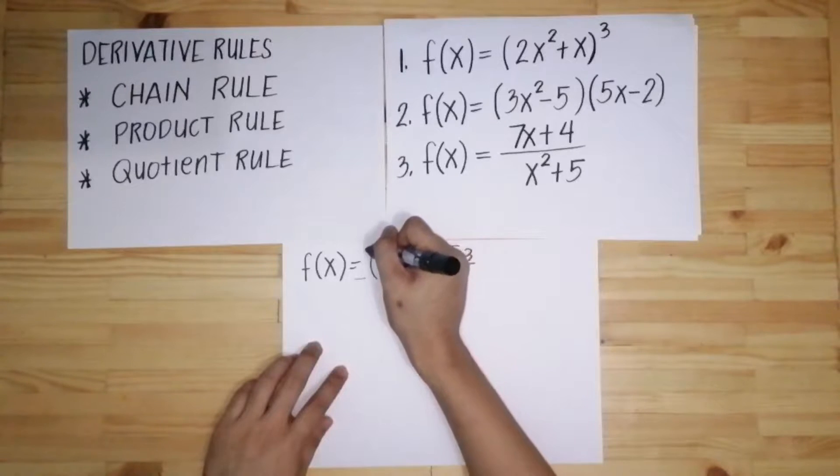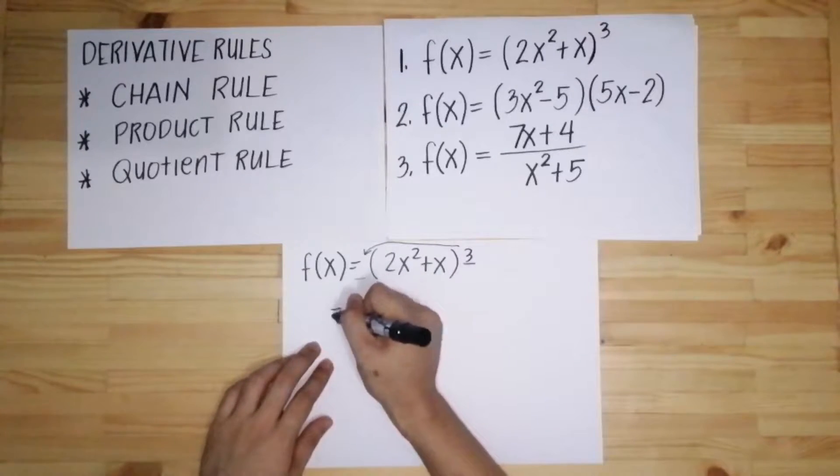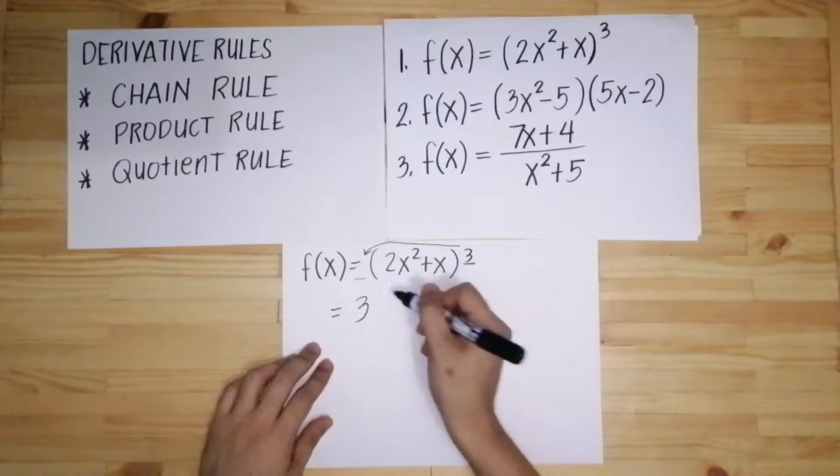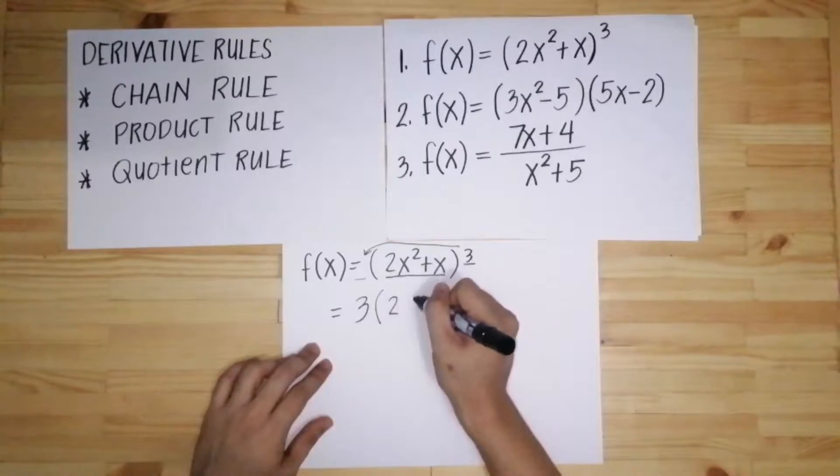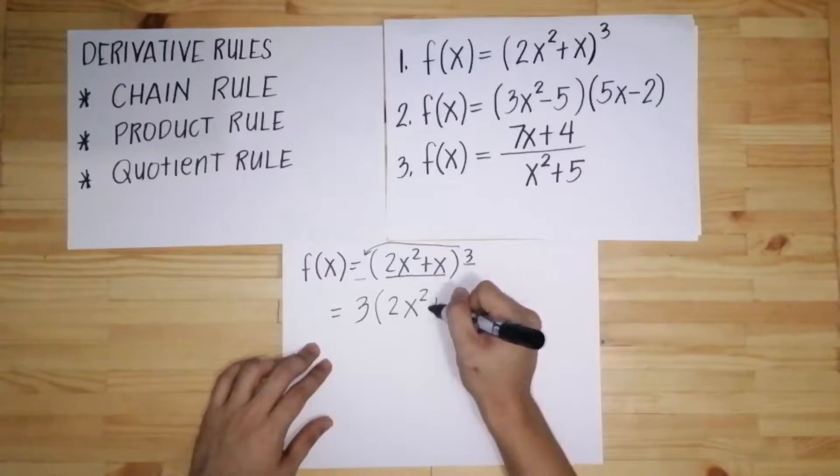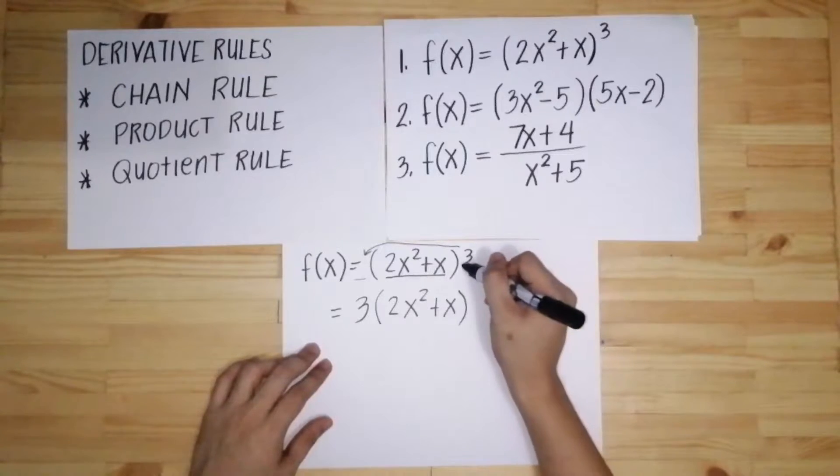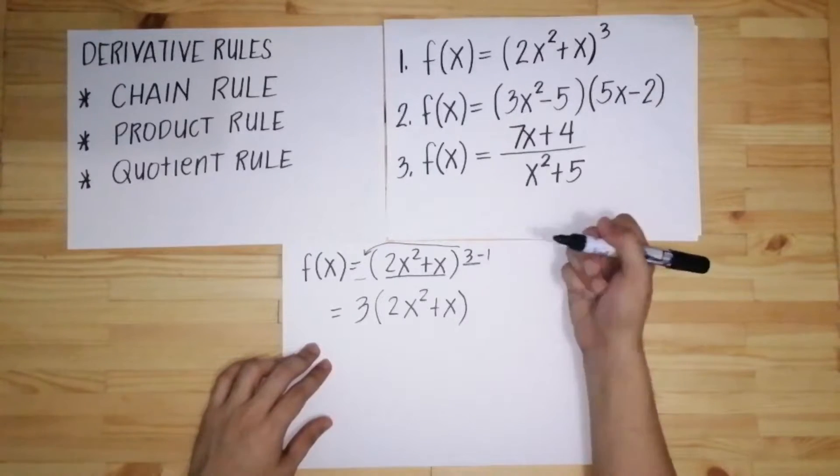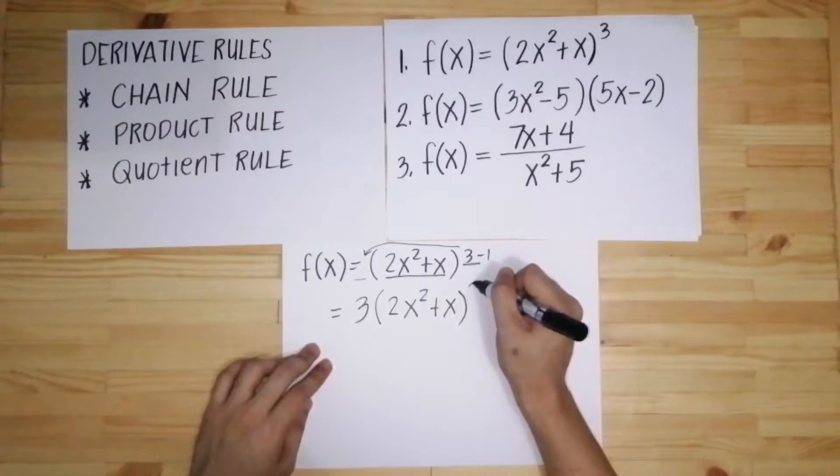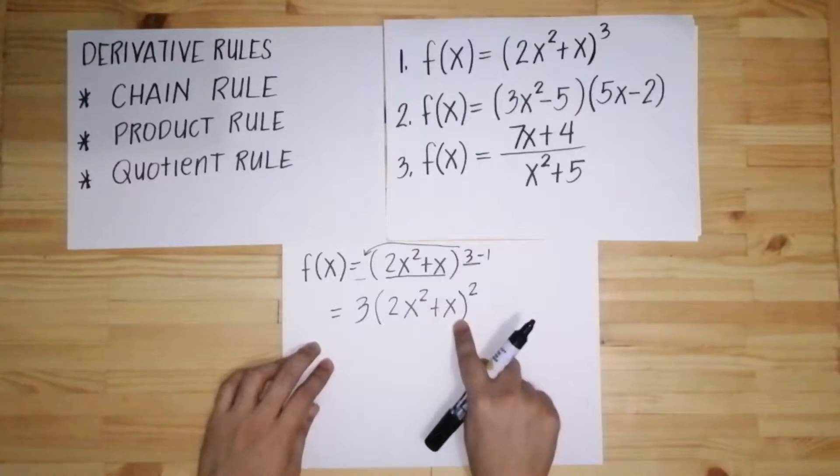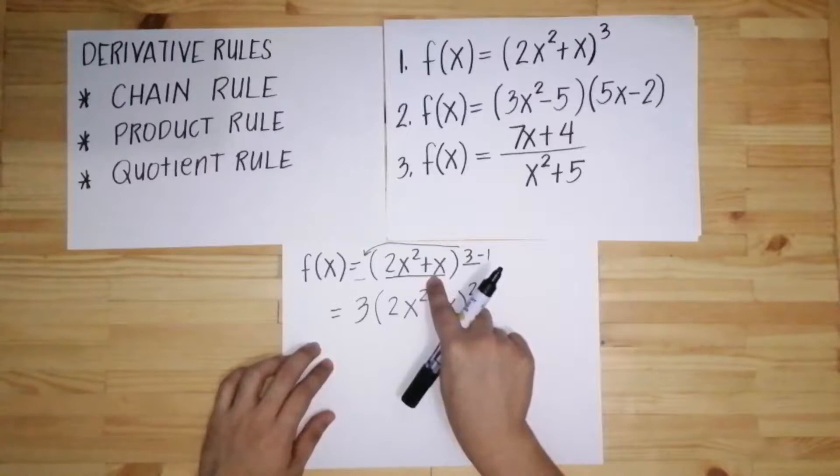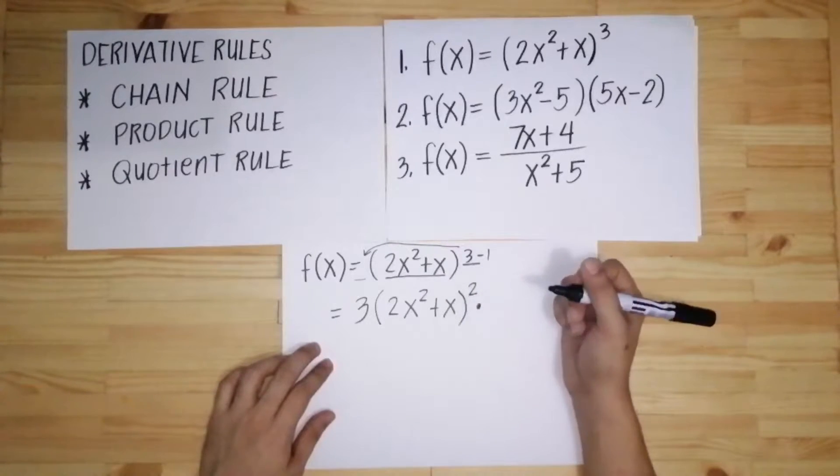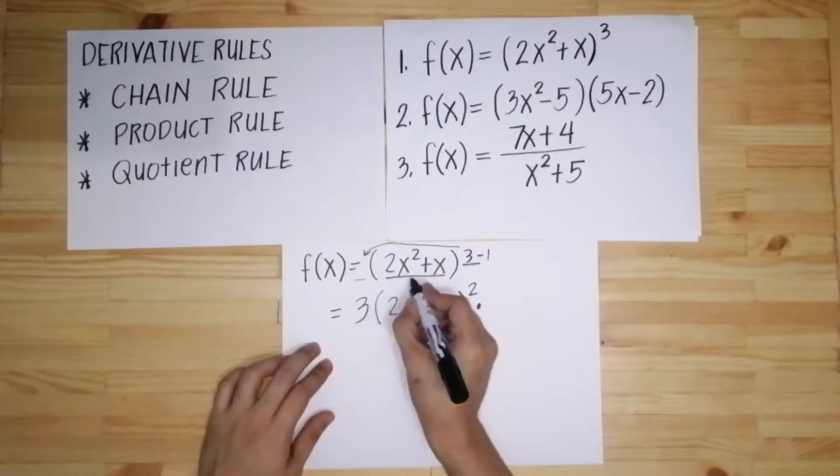So yung 3 na to, you just have to bring it down here. So magiging 3. Then copy mo itong buong equation inside the parenthesis, so 2x squared plus x quantity. Yung 3 na to, ma-minus 1 natin, parang power rule lang yan. So 3 minus 1, meron tayong squared. But this is not yet the final answer. Kailangan natin kunin yung derivative ng nasa loob.